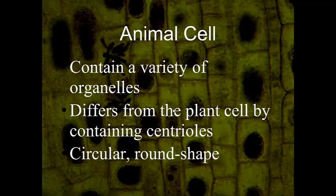The animal cell also has many organelles and differs from the plant cell because it has centrioles, which help with cell division. The animal cell is also circular and round in shape.